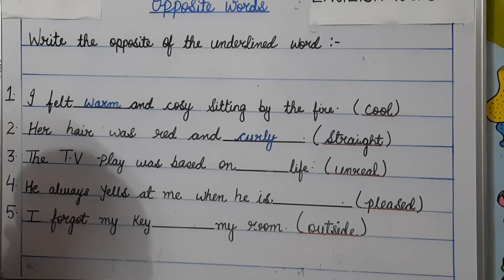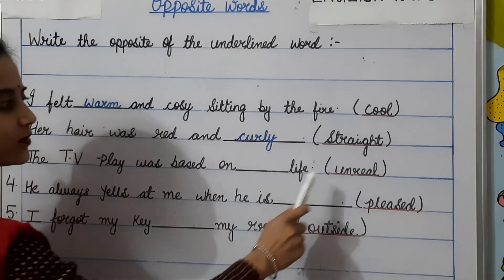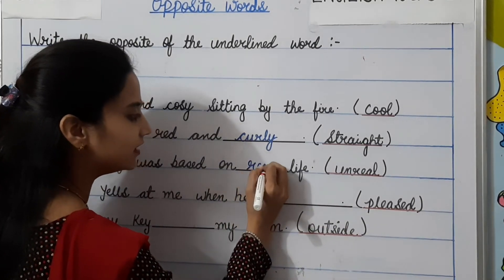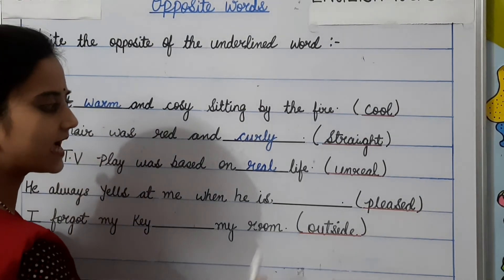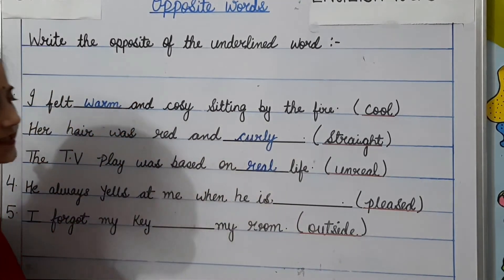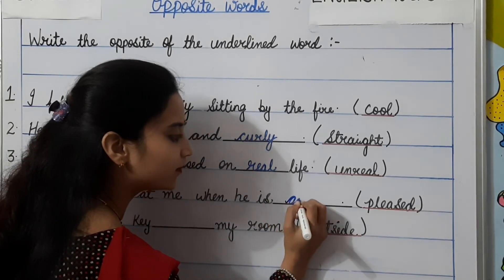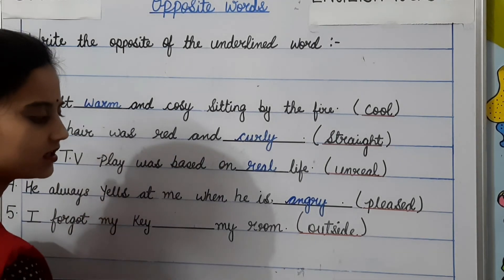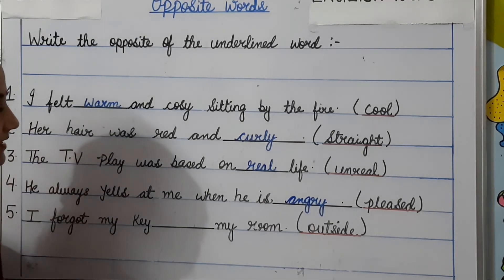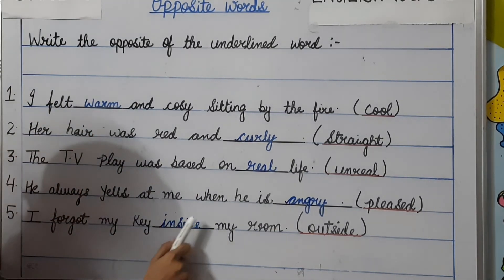Number 3: the TV play was based on dash life — the bracket says unreal. So the opposite of unreal will be real. Number 4: he always yells at me when he is dash — the underlined word is pleased. The opposite of pleased is angry. Number 5: I forgot my key dash my room — the word is outside. So the opposite of outside will be inside. I forgot my key inside my room.